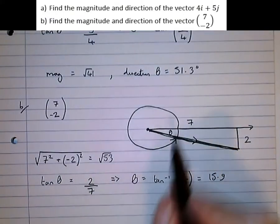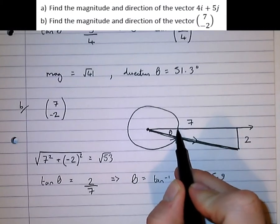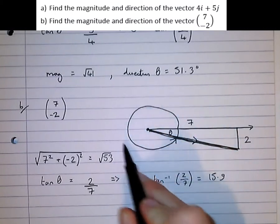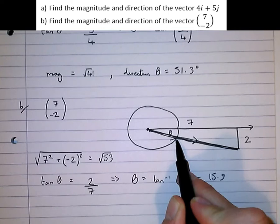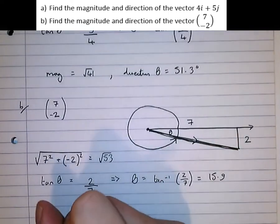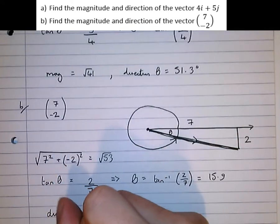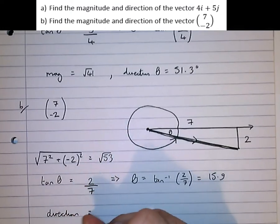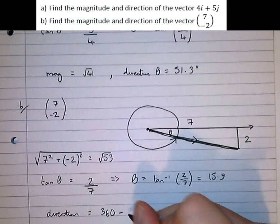But that's not good enough. We need this angle here, starting from the positive i axis, all the way around to our resultant. Well, we can just do 360 take that. So the direction equals 360 take our previous answer, 15.9.